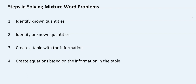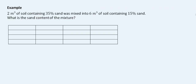The table allows you to see all the variables and constants you need in creating your equation. Let's look at this example together: two cubic meters of soil containing 35% sand was mixed into six cubic meters of soil containing 15% sand. What is the sand content of the mixture?